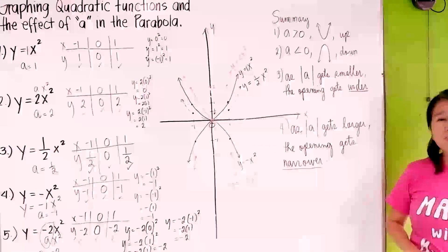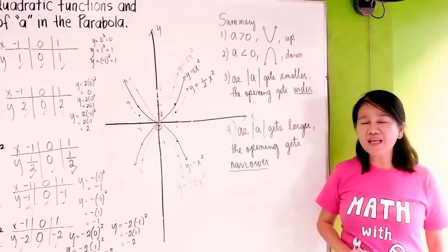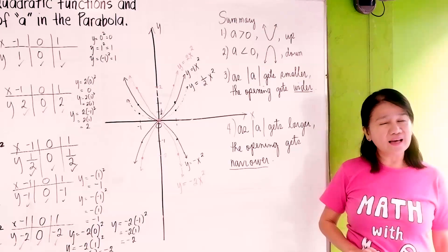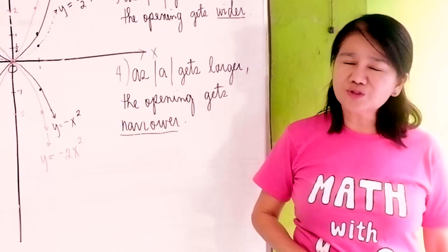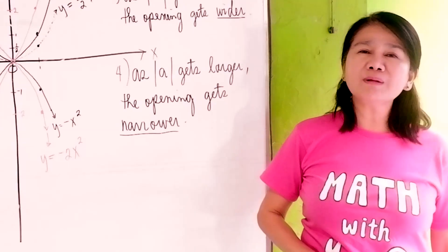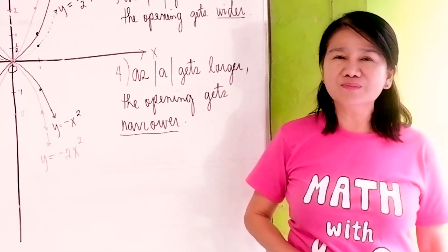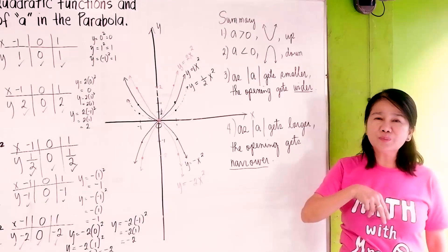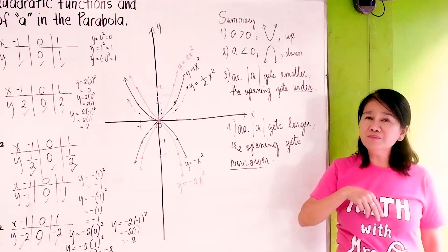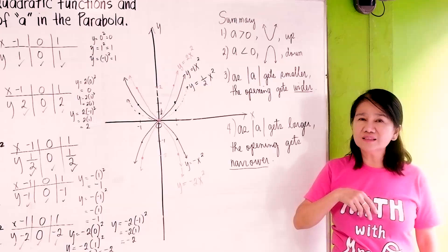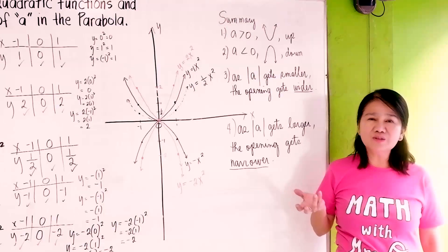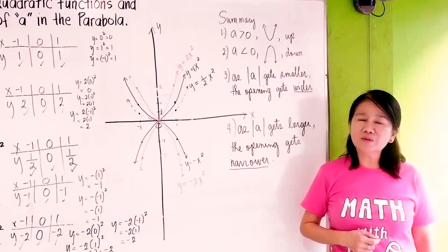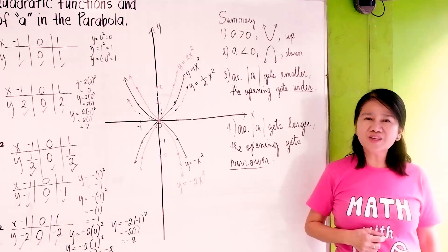So let's summarize again: when the value of A is greater than 0 or positive, your parabola opens upward. When the value of A is less than 0 or negative, your parabola opens downward. As the absolute value of A gets smaller, the opening of the parabola gets wider. As the absolute value of A gets larger, the opening of the parabola gets narrower. I hope I was of help. Don't forget to press the subscribe button and the bell button. Thank you.